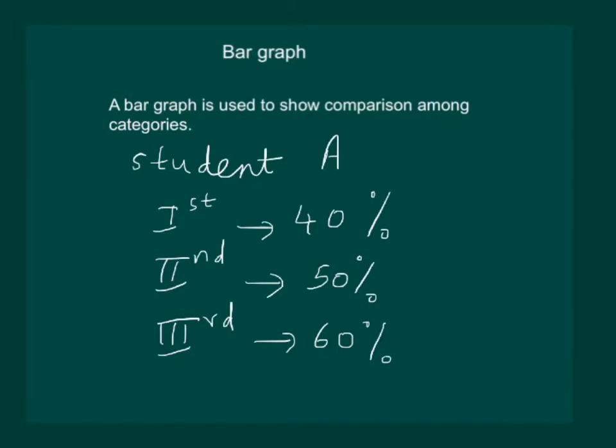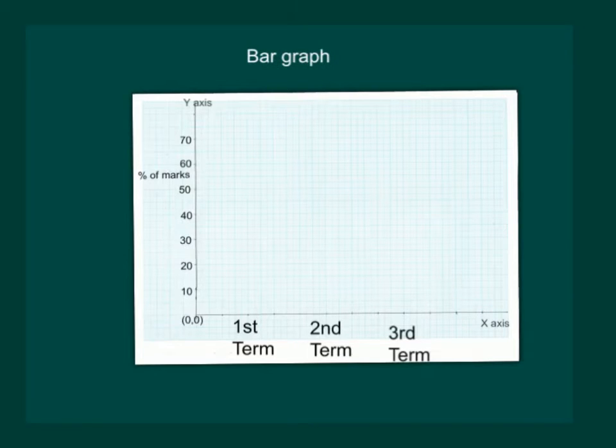Now we can compare his marks using a bar graph and let us see how to draw that bar graph. Let us start by drawing a bar graph for our example. Take a graph paper and mark x-axis and y-axis on it. On x-axis, we mark the terms, first term, second term and third term, taking 2 cm as 1 unit.